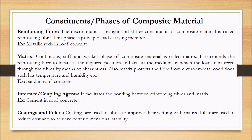An example of matrix is sand in the case of a concrete roof. The third constituent is interfaces or coupling agents — these facilitate the bonding between fibers and matrix. An example is cement in the case of a concrete roof; this cement binds the sand and iron rods.